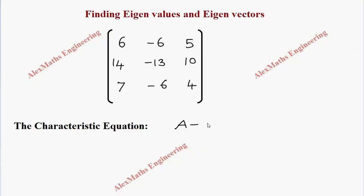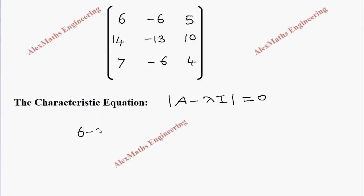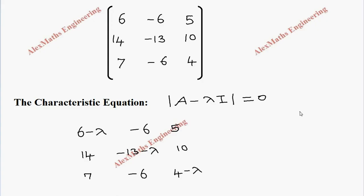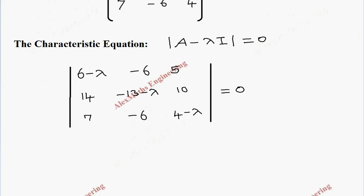So the first element will be 6 minus lambda, then the other two elements are as they are. In the second row: 14, then minus 13 minus lambda, then 10, then 7, minus 6, and 4 minus lambda. The whole determinant is equal to zero.